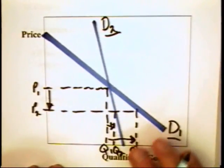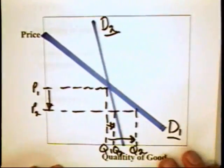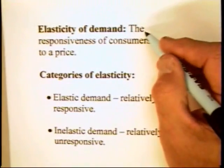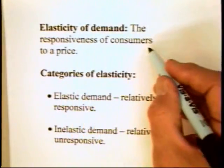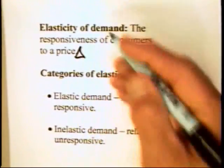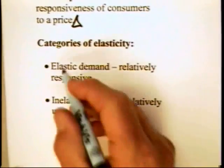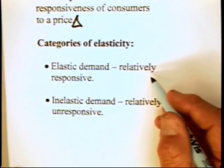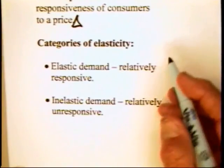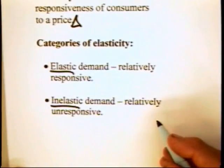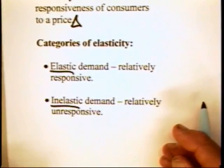The responsiveness of consumers feeds into our concept of elasticity of demand. The elasticity of demand is simply the responsiveness of consumers to a price change. There are two basic categories of elasticity: elastic demand, which means that consumers are relatively responsive to a price change, and inelastic demand, under which consumers are relatively unresponsive to a price change.